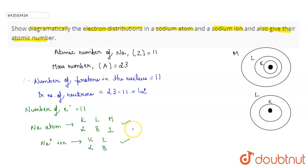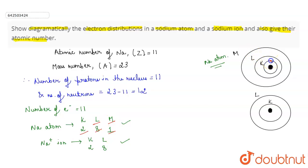Let's see the diagrammatic representation of sodium atom. As we have seen, in the K shell there are two electrons, in the L shell there are eight electrons, and in the M shell there is one electron. So let's draw these electrons: two electrons, eight electrons — one, two, three, four, five, six, seven, and eight — and in M shell, one electron.